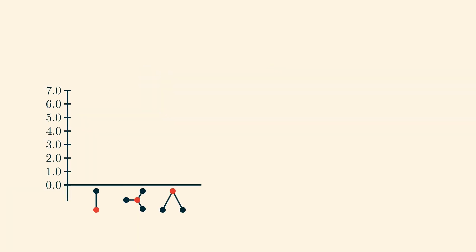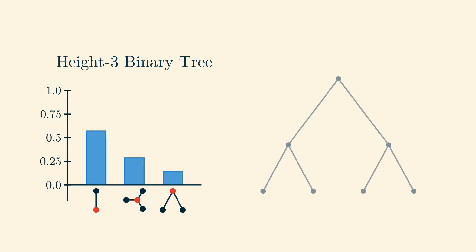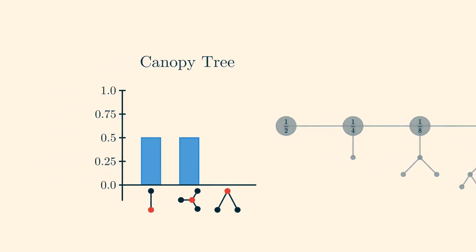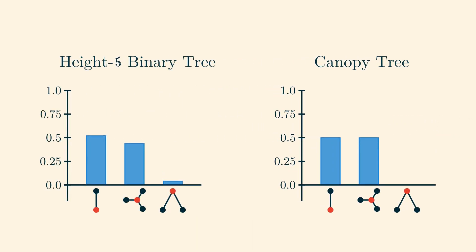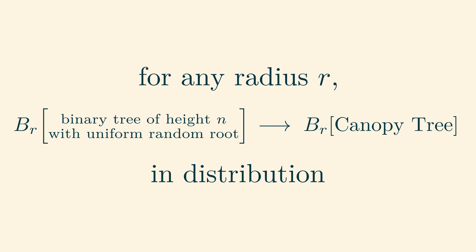Let's determine the distribution of the 1-balls in a binary tree of height 3. There are four vertices which have this 1-ball, two vertices which have this 1-ball, and only one vertex with this 1-ball. Dividing by 7, the total number of vertices, we obtain a probability distribution on 1-balls. Now let's determine the distribution of the 1-balls in the canopy tree. With probability one-half we'll see this 1-ball, and we'll see this 1-ball with probability one-fourth plus one-eighth plus one-sixteenth, etc. — that's another one-half. As you can see, when the height of the finite binary tree increases, the distribution of its 1-balls converges to the corresponding distribution for the canopy tree. We can make a similar chart for the 2-balls, and we find by inspection that the distribution converges to the right limit in this case as well. We'll leave it as an exercise for you to prove rigorously that the distribution of the r-balls in the finite binary tree converges to the distribution of the r-balls in the canopy tree for every r.